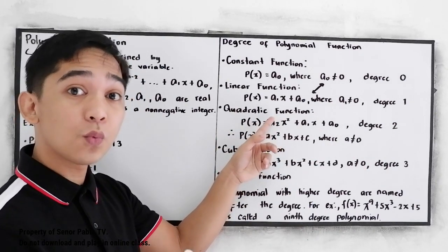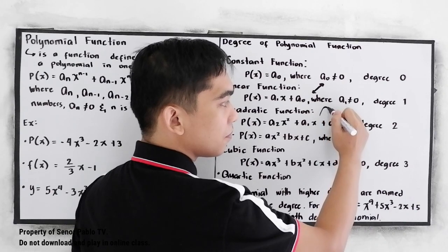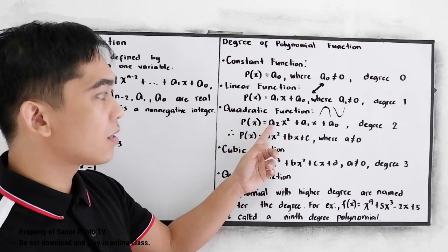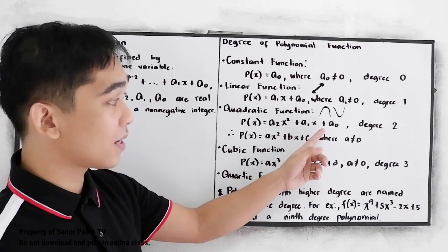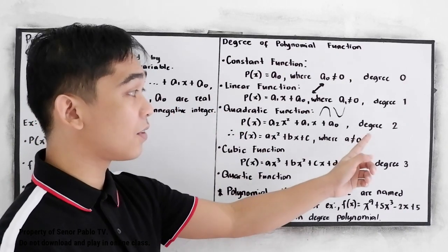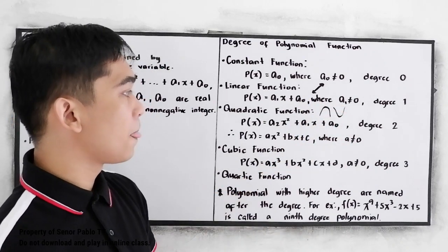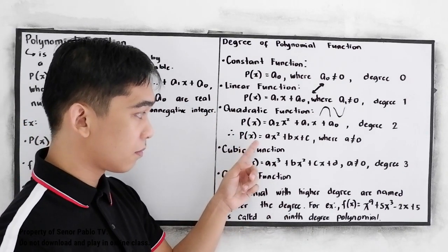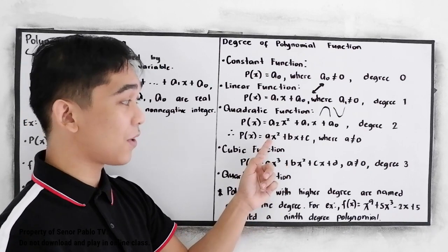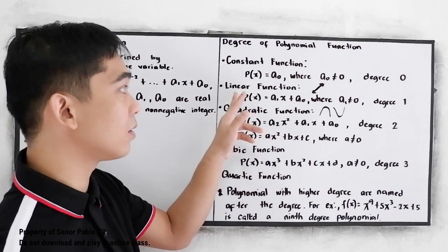Quadratic function — your lesson from grade 9. We know that the graph of a quadratic function is a parabola. It is in the form p(x) = a-sub-2 x² + a-sub-1 x + a-sub-0, and it has a degree of 2 — that's why its graph is a curved parabola. It can also be written in standard form as ax² + bx + c, where a is not equal to 0. If a were 0, it would become linear, not quadratic.